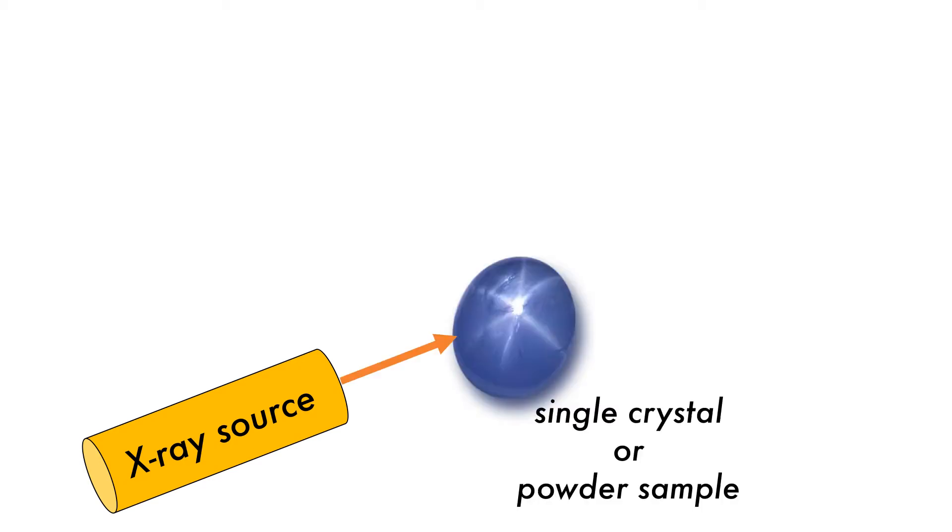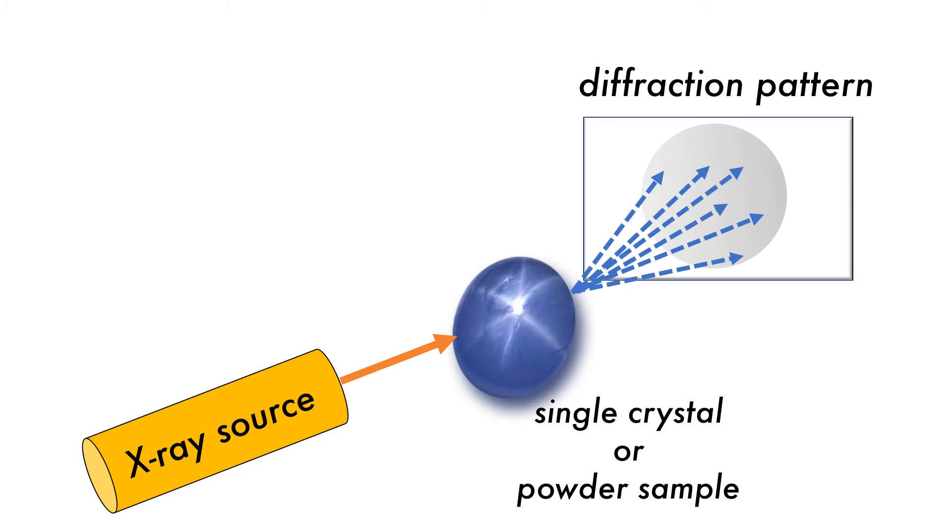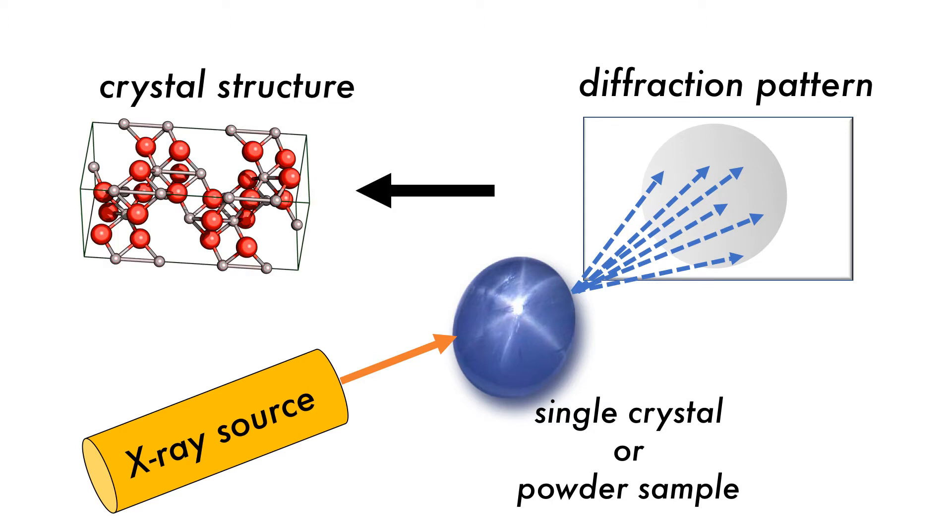In a typical X-ray experiment, we have an X-ray source that emits X-rays of a single wavelength towards a sample which can either be a single crystal or a powder. When the X-ray interacts with the sample, the X-rays are scattered creating a diffraction pattern. This diffraction pattern can then be used to elucidate the crystal structure.